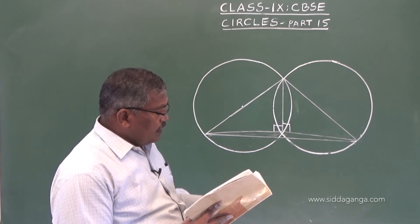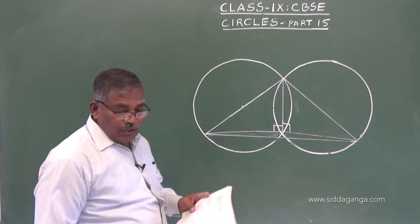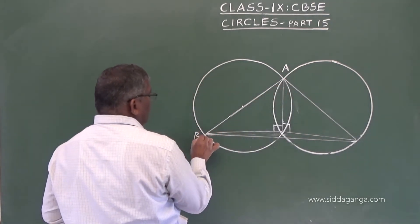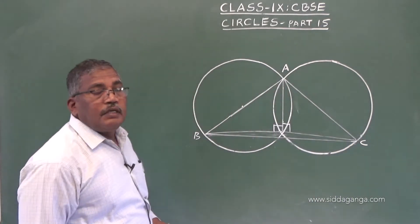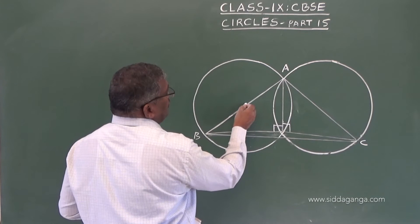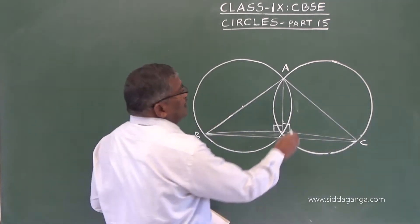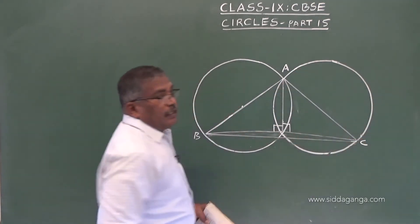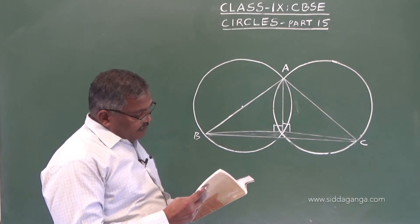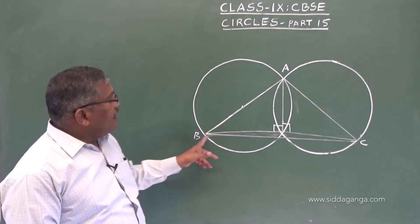10th question: if circles are drawn taking two sides of a triangle as diameter — ABC is a triangle where AB is the diameter of one circle and AC is the diameter of the other circle — prove that the point of intersection of the circles lies on the third side BC.